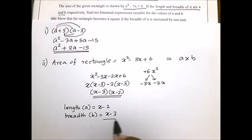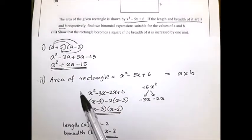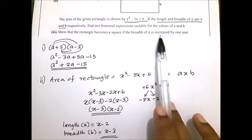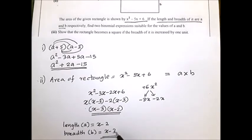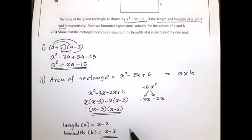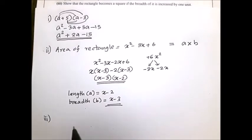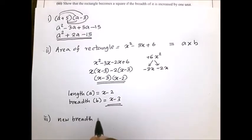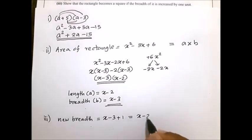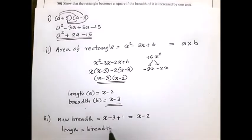Third part: show that the rectangle becomes a square if the breadth is increased by 1 unit. New breadth equals (x − 3) + 1 equals x − 2. Length is also x − 2. Now length and breadth are equal. If length equals breadth, it is a square. This is the answer for the third part.